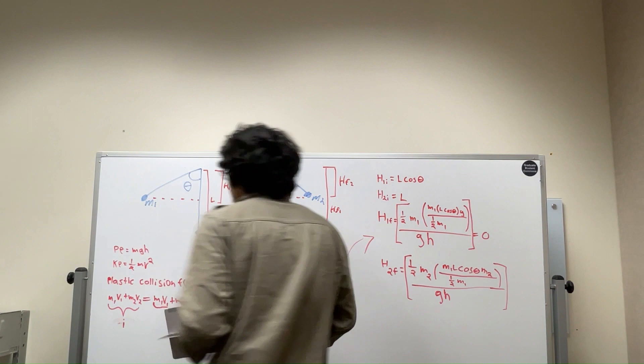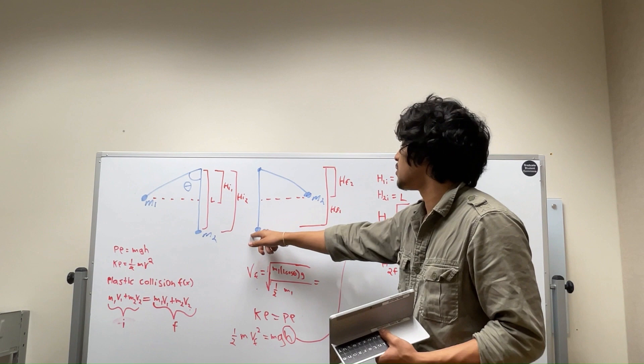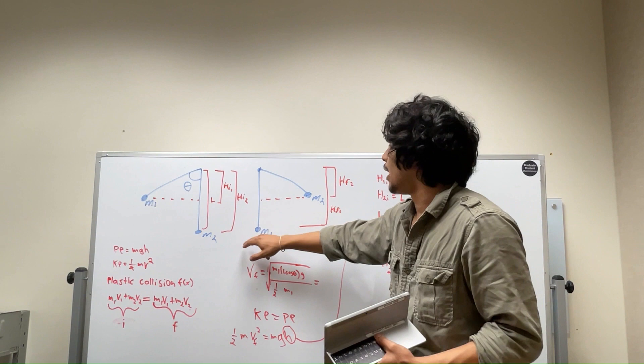Things that will make it change is if mass 1 is smaller than mass 2, what will happen is mass 2 will go up at slightly less of a height, and some of the energy will be transferred back into mass 1, slowly pulling it back, changing its height too.